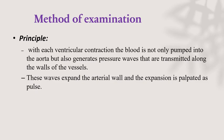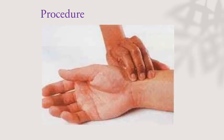Coming to the method of examination, the principle behind examining the arterial pulse is that with each ventricular contraction, blood is not only pumped into the aorta but also generates pressure waves that are transmitted along the walls of the vessels. Because of these pressure waves, we are able to feel the pulse. The waves expand the arterial wall, and this expansion is palpated as pulse.